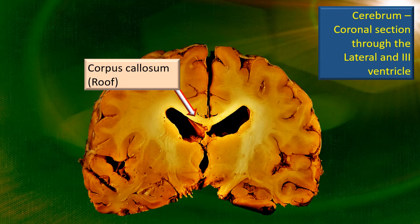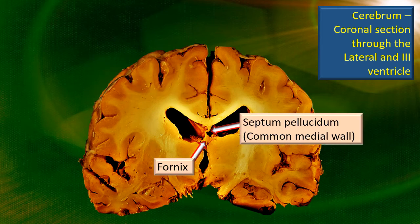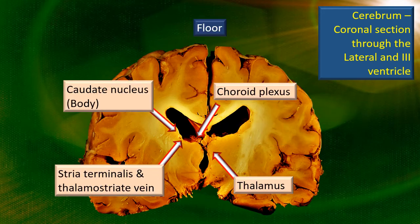That's the corpus callosum. Forming the medial wall is the midline septum pellucidum and below that the fornix. These two form the common medial wall for both lateral ventricles. The floor is the most important in the sense that there are three to four structures worth remembering, and they are all visible very clearly to the naked eye in a well-dissected brain.